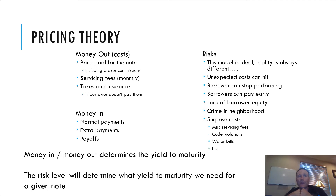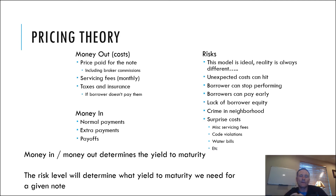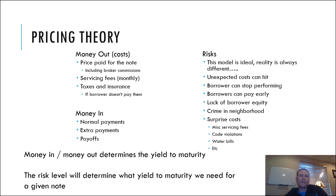Some of the cash flows out are going to be the price you pay for the note, broker commission, and servicing fees paid monthly. In some cases, there could be property taxes and insurance if the borrower isn't paying them. Hopefully if it's a performing note the borrower is paying them, but I have seen loans where the borrower makes the regular payment every month but refuses to pay the property taxes. The cash flows coming in are typically going to be just the monthly payment, although sometimes borrowers may make extra payments, or if you're really lucky, you may be able to get an early payoff.